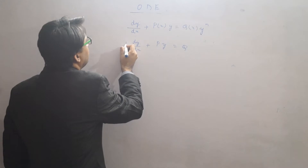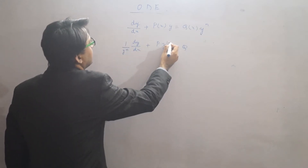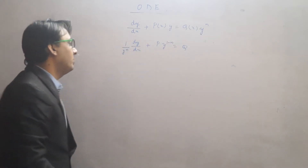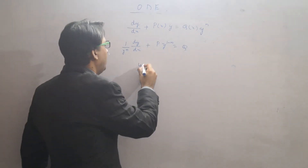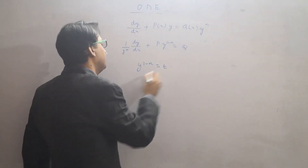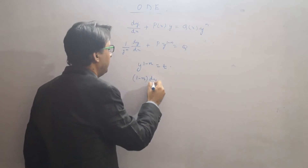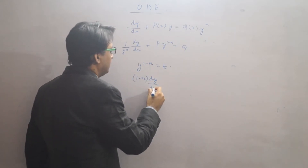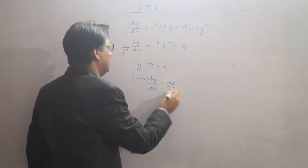So this becomes 1 by y to the power n. Now what I do, I put a substitution: y to the power (1 minus n) is equal to t. That means (1 minus n) times (1/y^n) times dy/dx is equal to dT/dx.